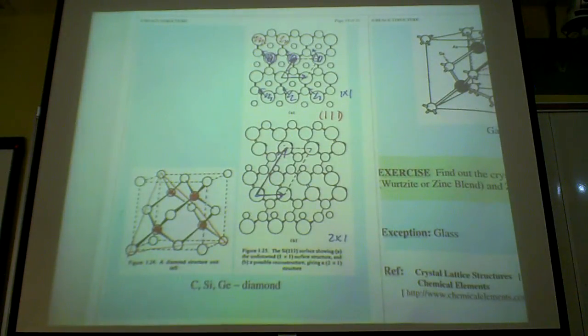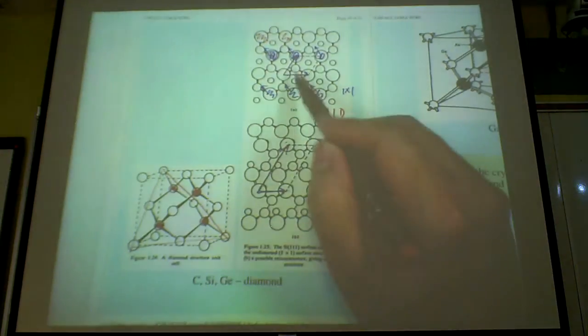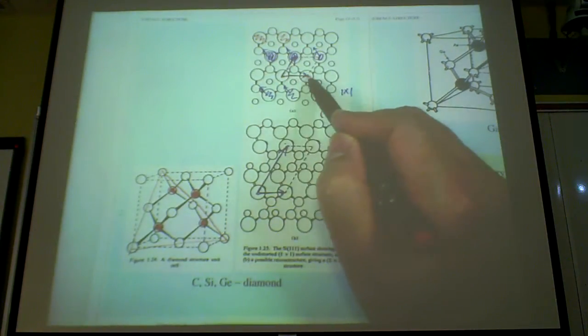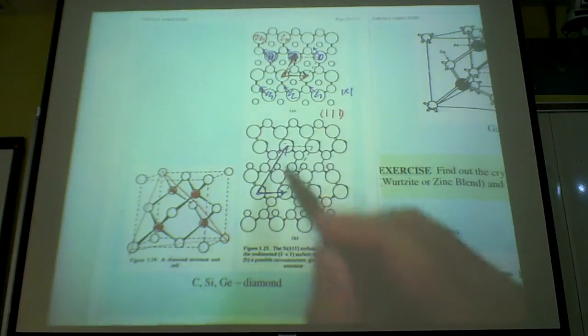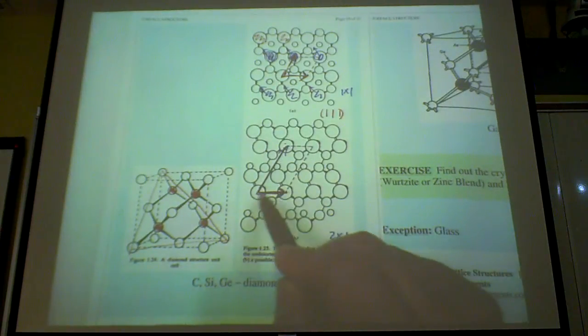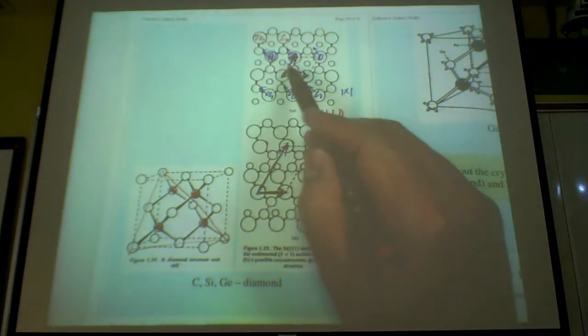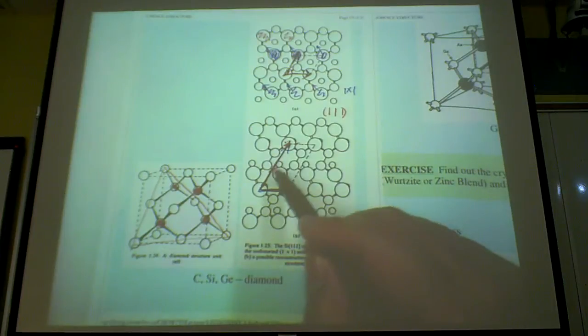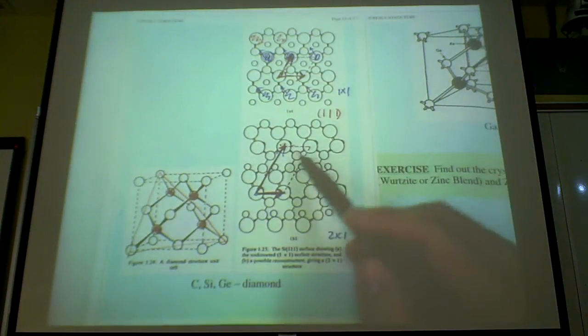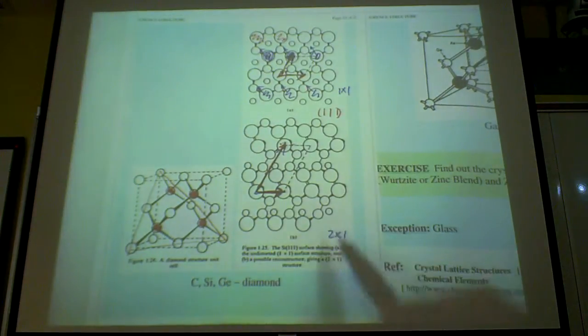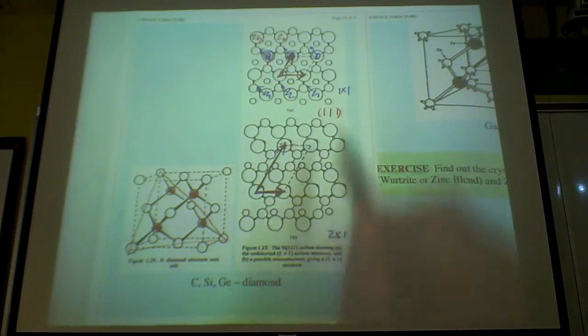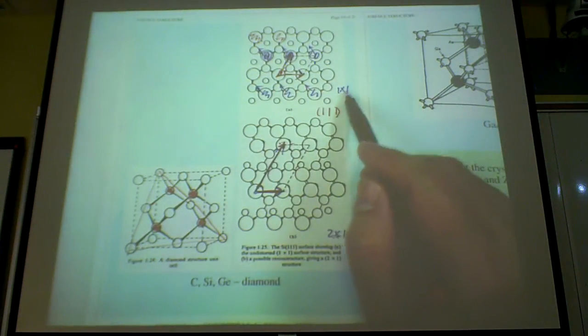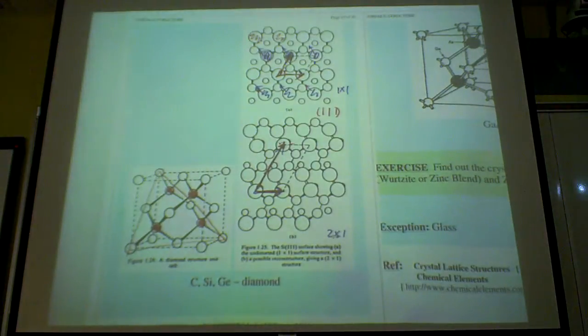And so what you've got, instead of a 1x1 structure, because this and this is the same, you have 1x2 structure. Because this spacing and 2 spacing is double. Essentially, this atom is moved far enough that you have generated the unit cell in one direction twice as long as the other one. So this is what you call 2x1 reconstruction. This is called 1x1 unreconstructed surface that you have.